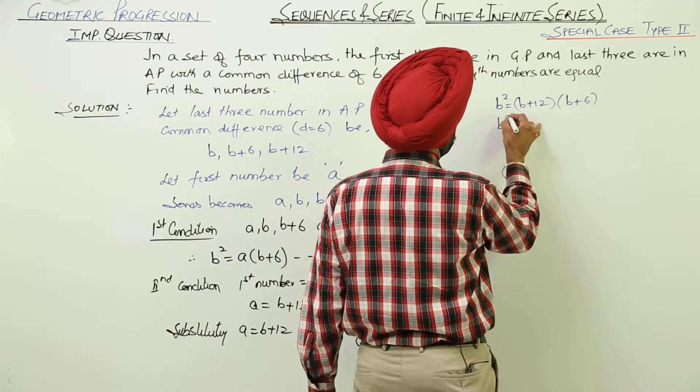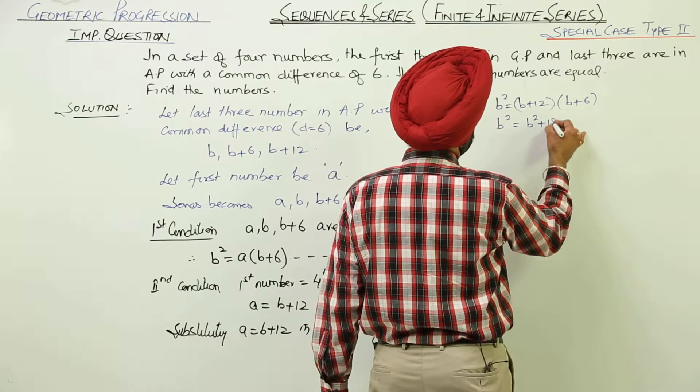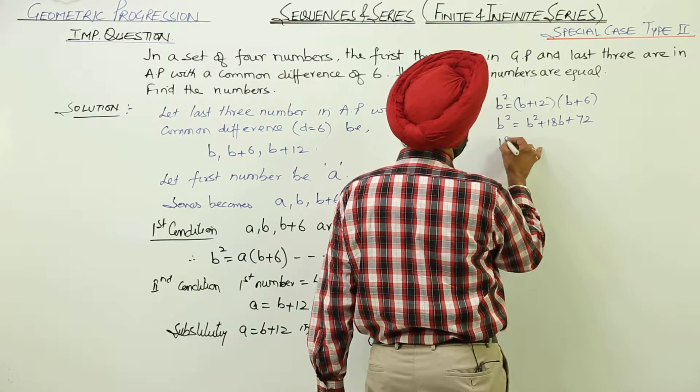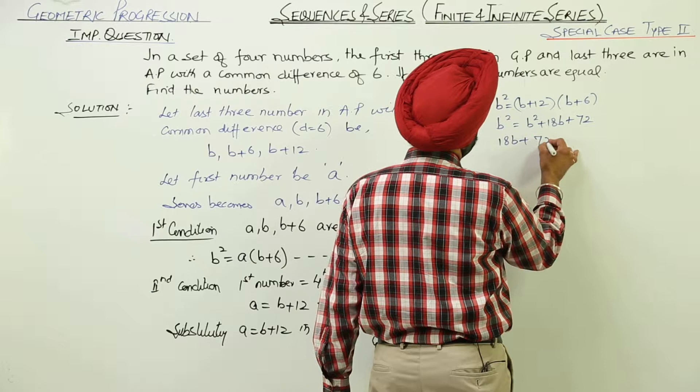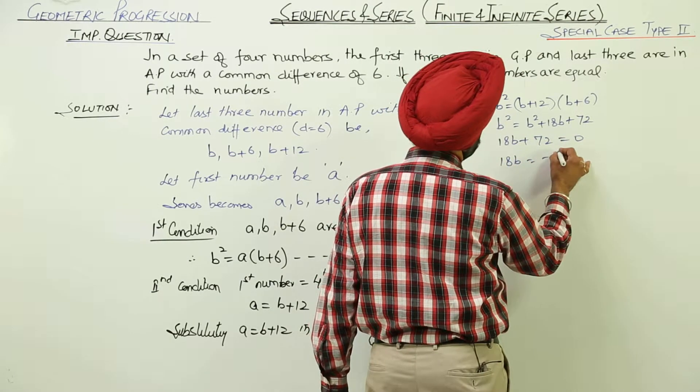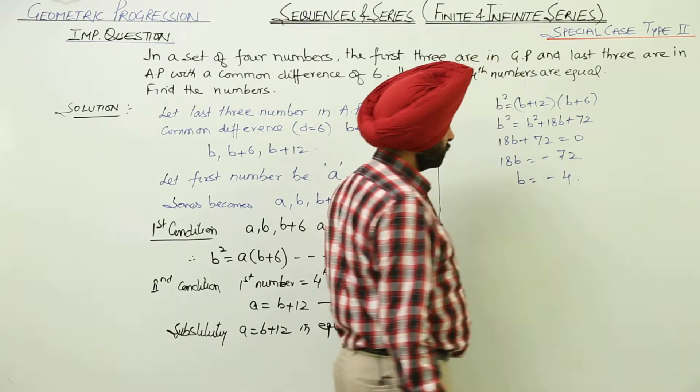Now, solving this part, what we are having? It will be B square plus 18B plus 72. 18B plus 72 is equal to 0. 18B is equal to negative of 72 and B is equal to negative of 4.